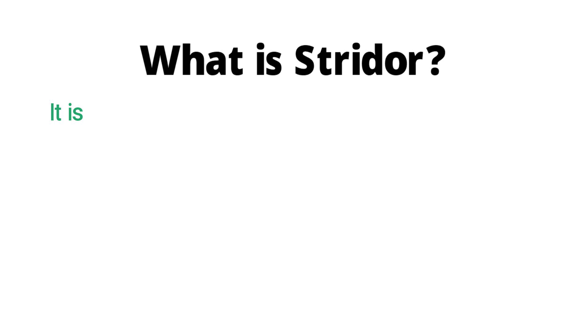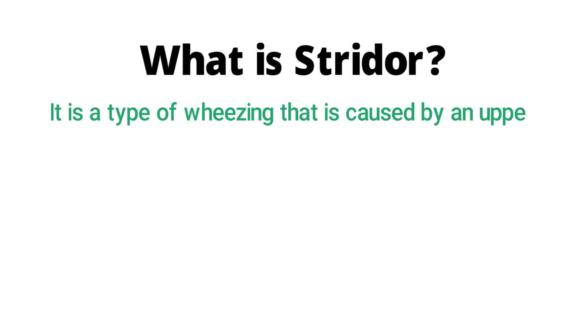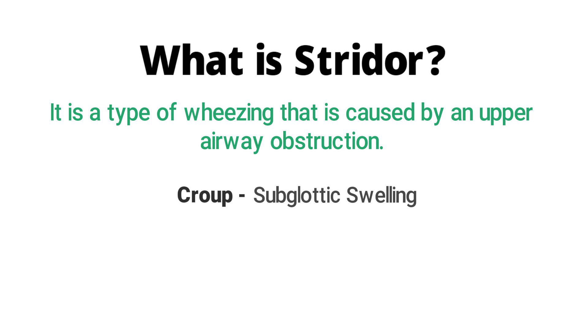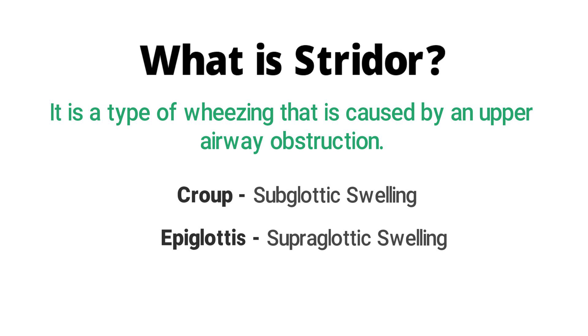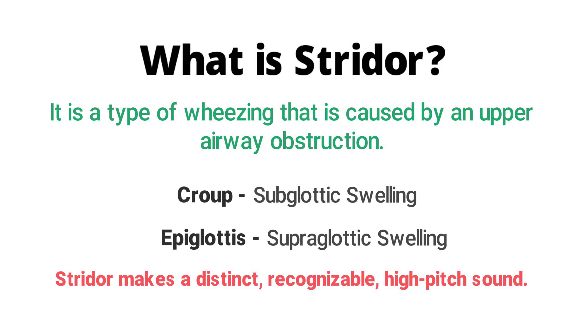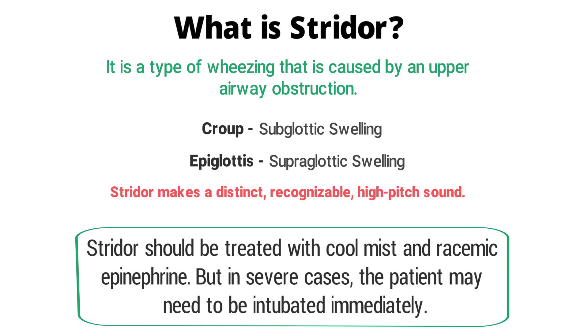Now let's talk about stridor, since technically it is a type of wheezing. Stridor is usually caused by an upper airway obstruction. It is often seen in croup, which is subglottic swelling, and in epiglottitis, which is supraglottic swelling. Because the obstruction is in the upper airway, you will hear a very recognizable, distinct high-pitched sound. Stridor can be treated with cool mist and racemic epinephrine, and in severe cases the patient may need to be intubated immediately.